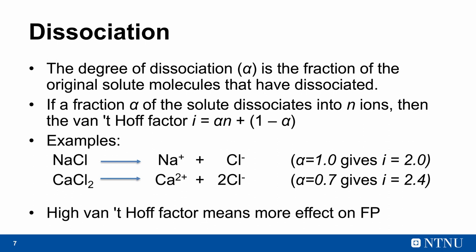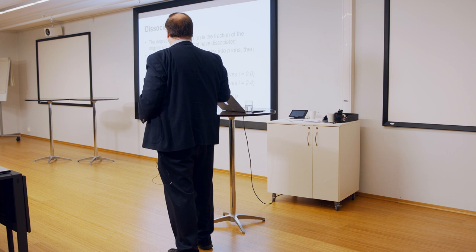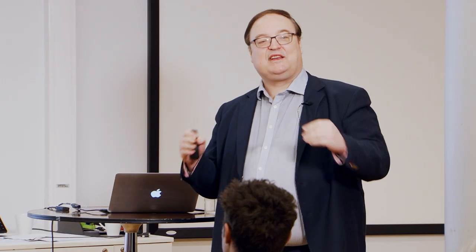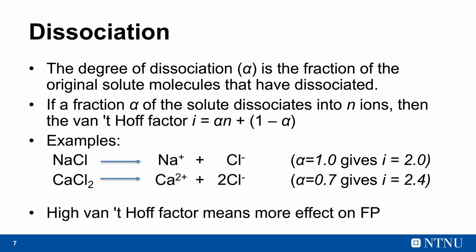The clue is that the degree of dissociation we call alpha here is the fraction of the original solute molecules, think about the salt grains, that have dissociated. And here I have skipped a lot of chemistry, but I just want to show you a formula. And that formula takes into account what they call the van't Hoff factor. So the clue is for Natrium Chloride, we get one such ion and one this. And then this means that this N is equal to 2. And for Natrium Chloride, you typically can dissolve everything if the amount is small enough, so the alpha is equal to 1.